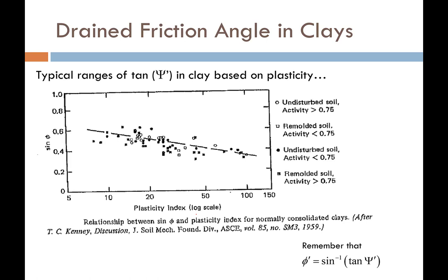Here's another chart showing similar behavior, this time for the tangent of psi — which equals the sine of phi — given by Kinney and published in the ASCE back in 1959. All these data points come from lots of different soil types with different levels of activity, whether greater or less than 0.75, and plotted as a function of the plasticity index. From this plot you can get the sine of phi and come up with an estimate of your friction angle phi, or get psi if you'd like.